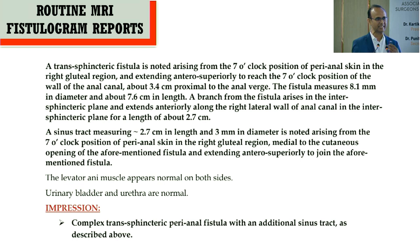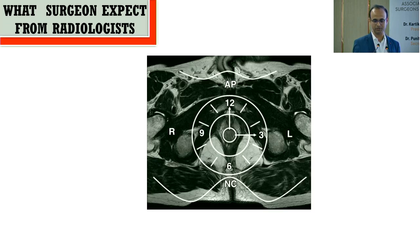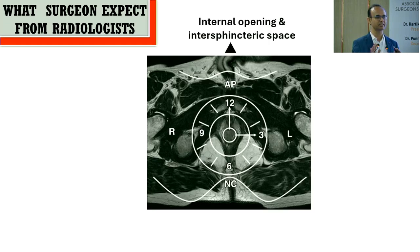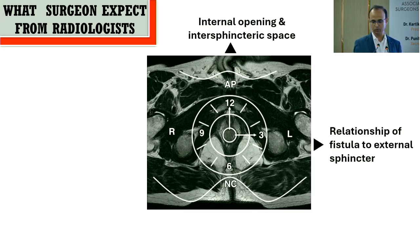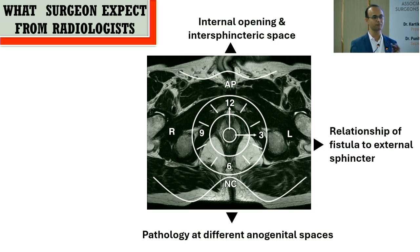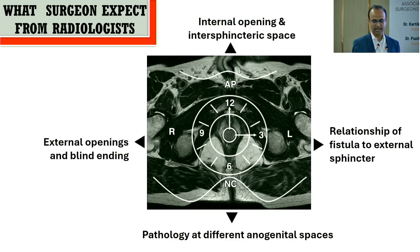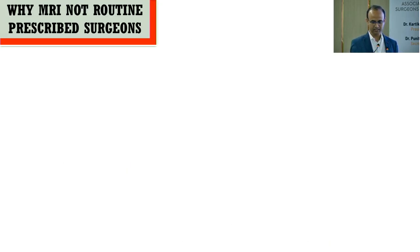As a surgeon, what I expect from a radiologist is: where is the internal opening and internal sphincter (the central disease); what is the relation of the fistula with the sphincter, particularly the external sphincter, so my decision about sphincter-cutting versus sphincter-preserving surgery is determined; what pathology in different anogenital spaces needs to be drained; and whether there is a blind ending or a second internal opening.